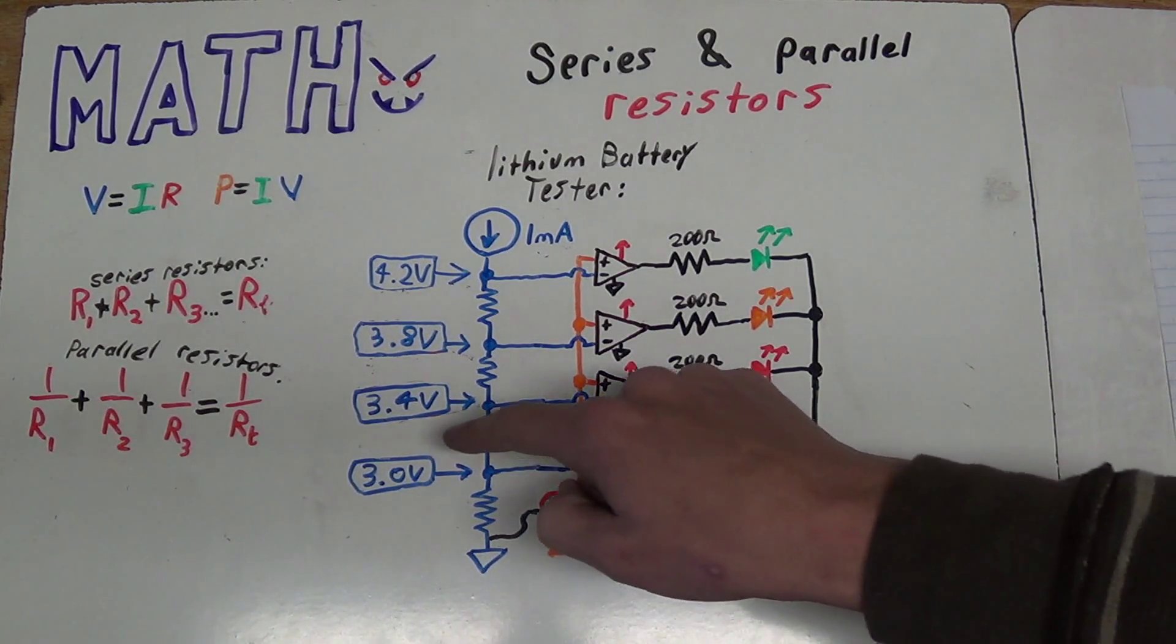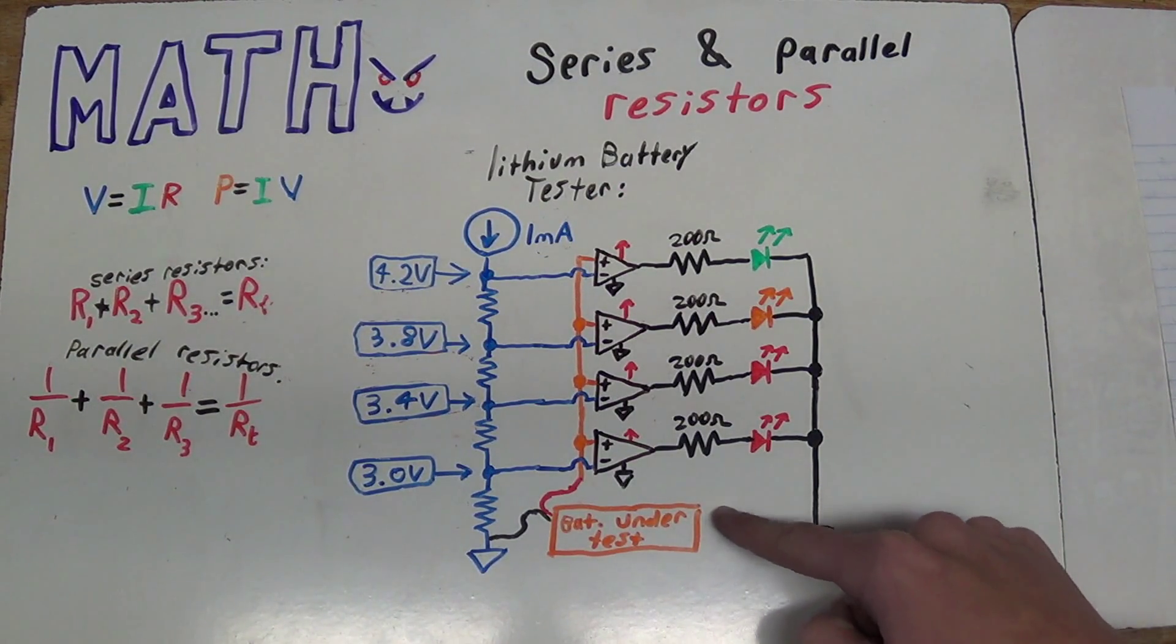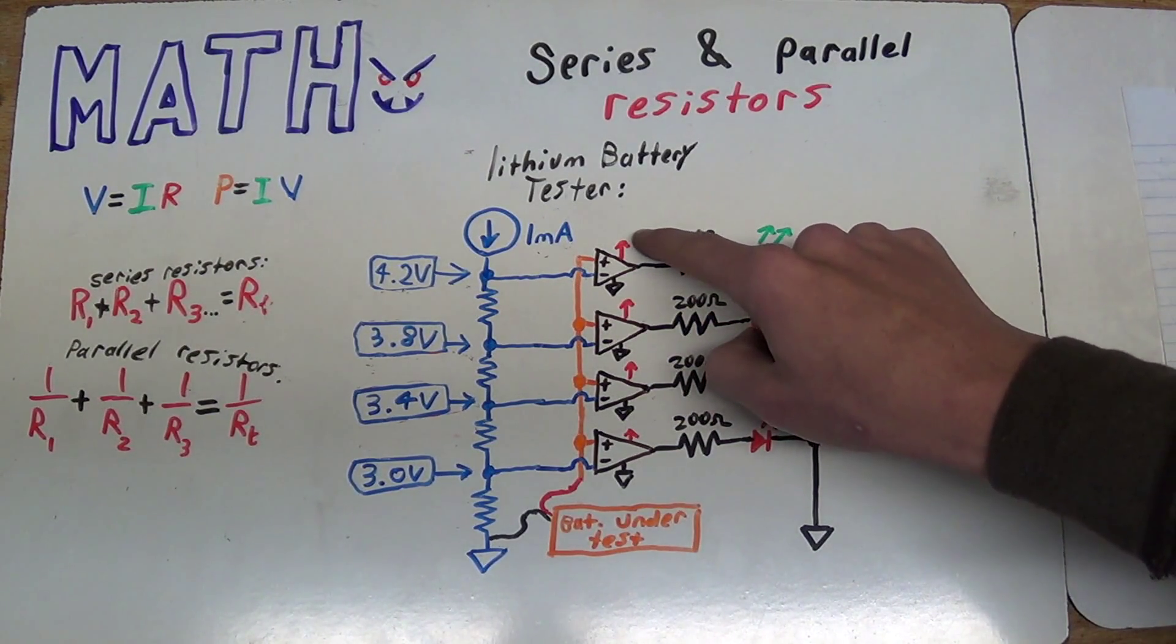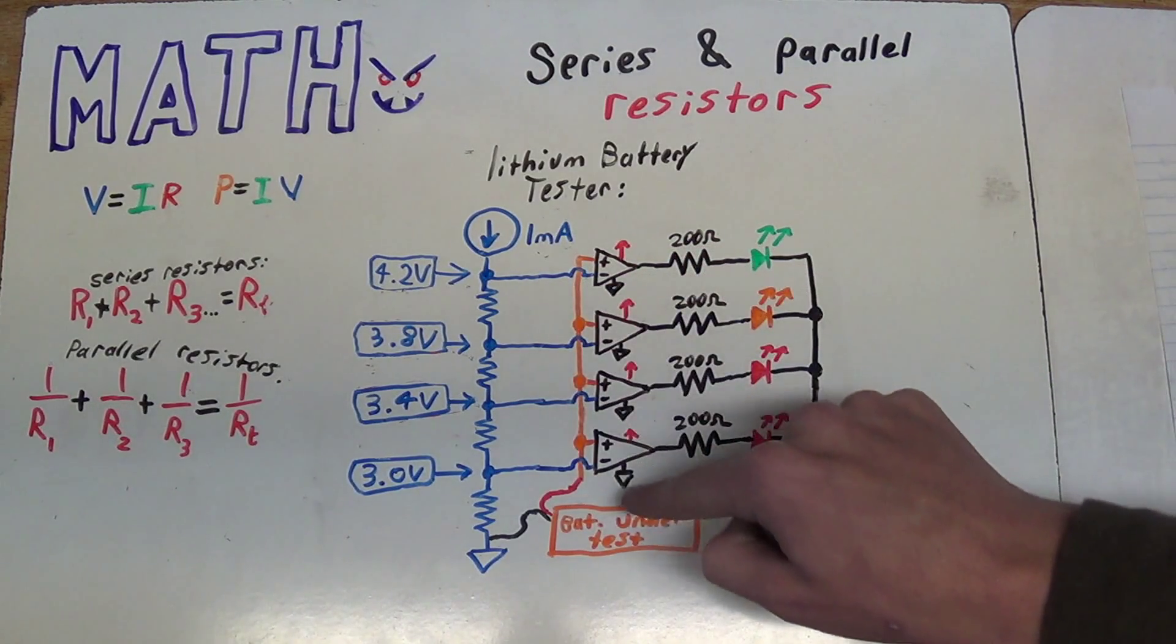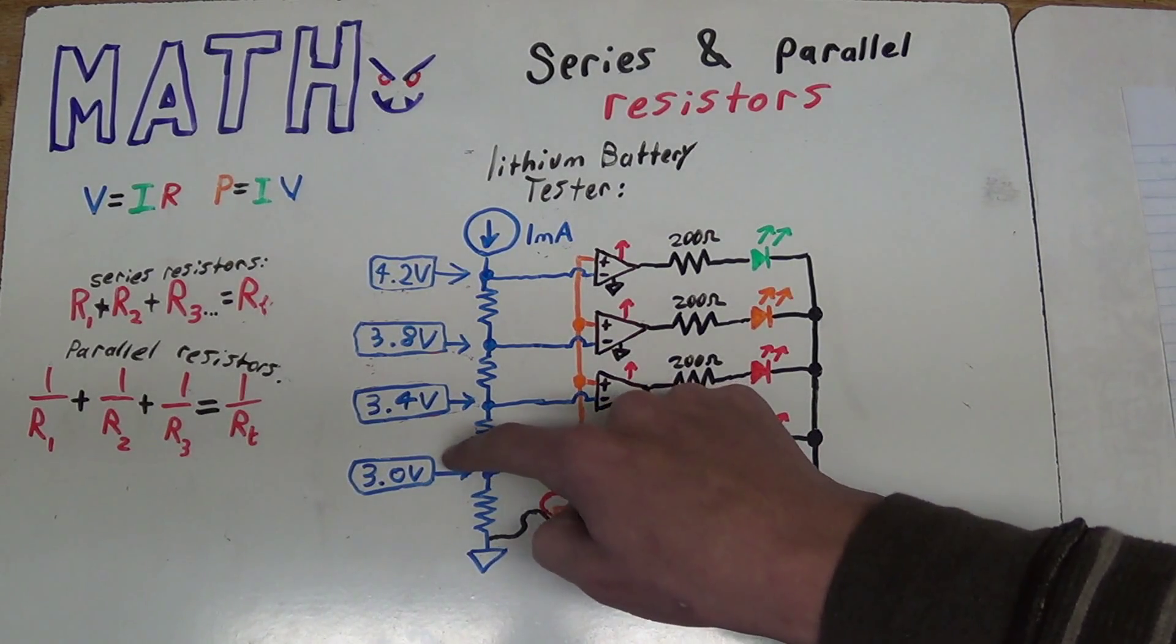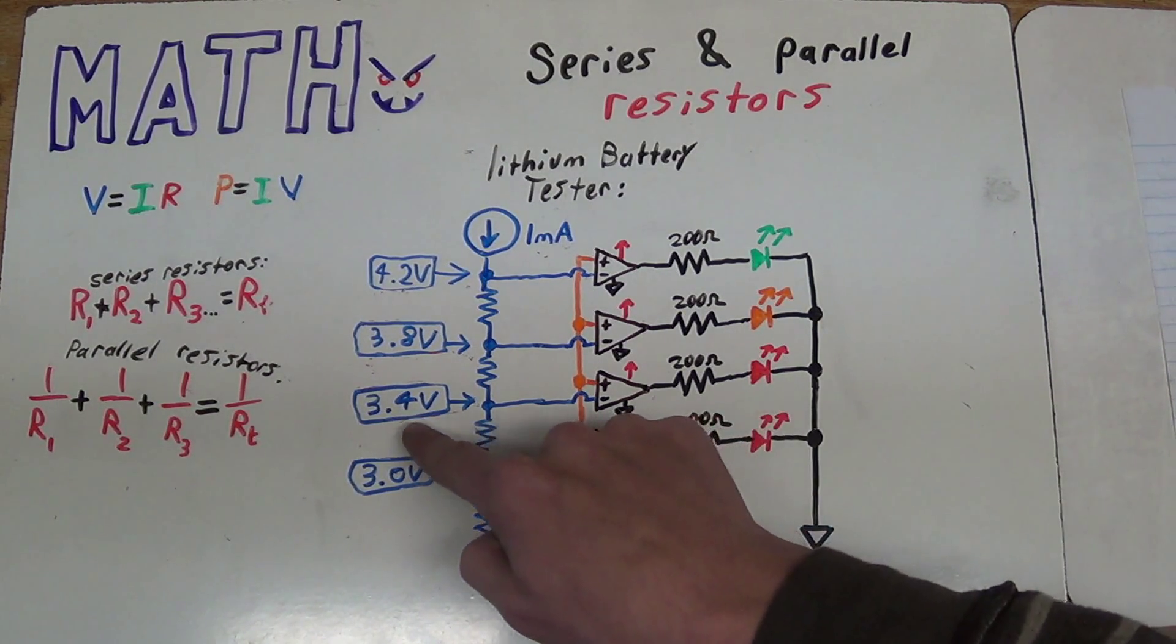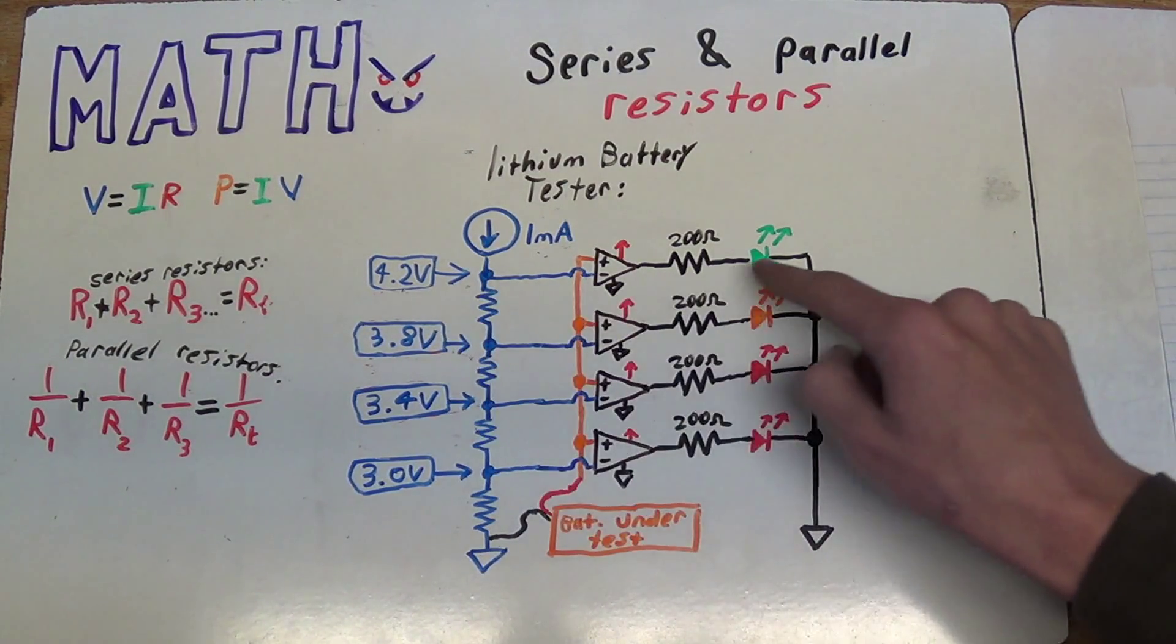You can see here I've got 4 reference voltages that correspond to the charge of the battery that's under test. The heart of this circuit are these 4 comparators here. I actually have 6 in the final circuit, but for simplicity I've only drawn 4 here. And you can see the comparator's job is to compare the reference voltage to the battery's voltage, and then drive the LEDs accordingly. So when the voltage is less than 3 volts, or at 3 volts, this lamp will be either off or just barely on, respectively.